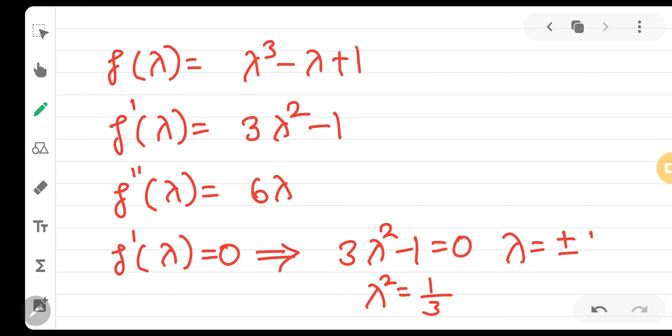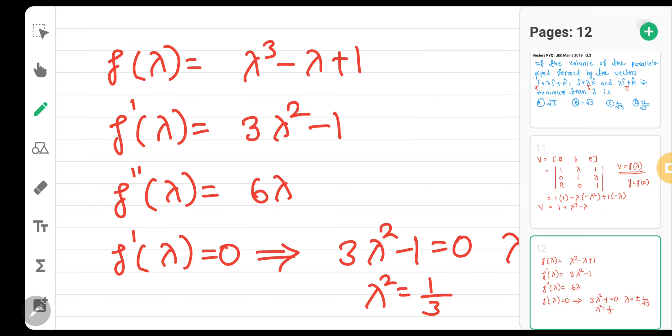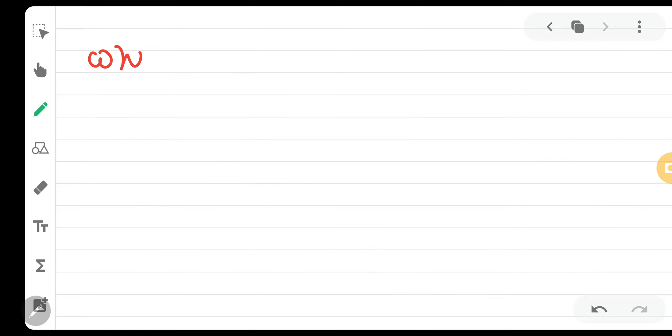So you just have to check the double derivative. So when lambda equals 1 by root 3, f double dash of 1 by root 3 will be 6 into 1 by root 3. This value is positive. Positive value means greater than 0. If your second order derivative is positive, f of lambda is minimum.